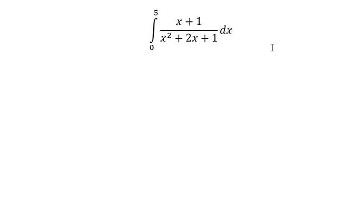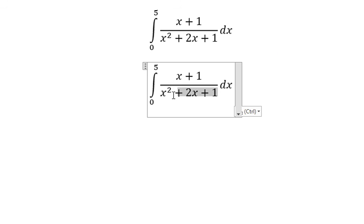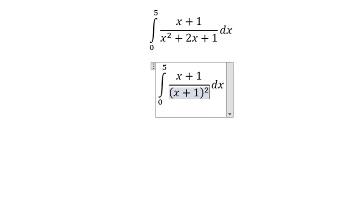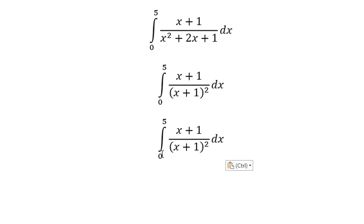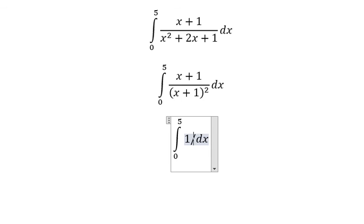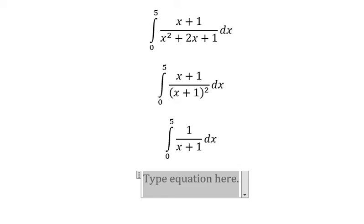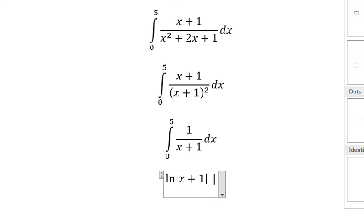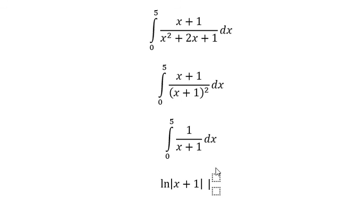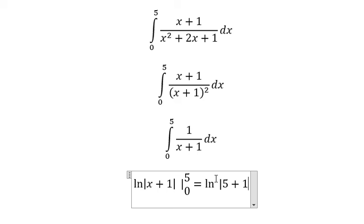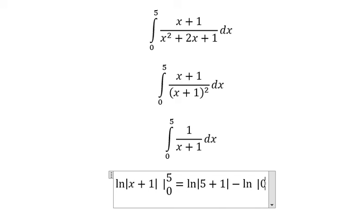This one we transform into s plus 1 to the bound of 2. We simplify s plus 1, and we got bound 1 over s plus 1. And this one we got about ln of the absolute value of s plus 1. And we have the boundary from 0 to number 5. So we have the boundary from s plus 1. So we got about ln of 5 plus 1 minus ln of 0 plus 1.